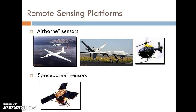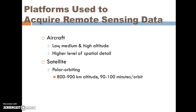We're going to be distinguishing between airborne sensors and space-borne sensors. Airborne refers to aircraft, unmanned aerial vehicles, or helicopters, versus space-borne sensors that are mounted on satellites. Some of the characteristics that distinguish airborne versus satellite platforms include orbit, which is obviously a key consideration when talking about satellites.